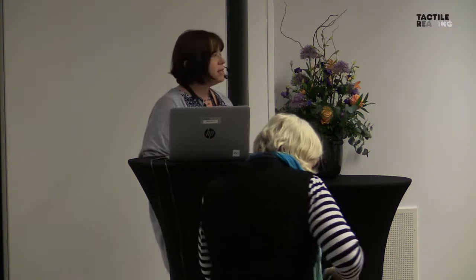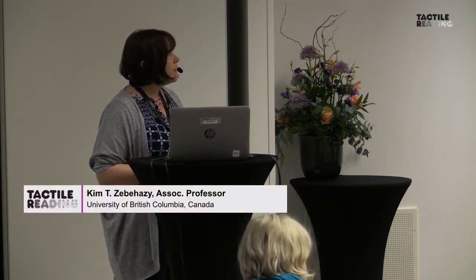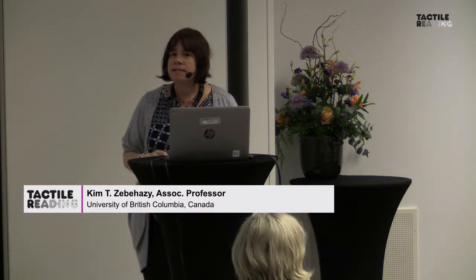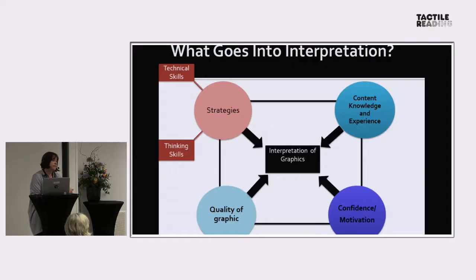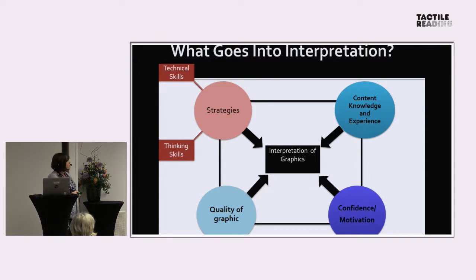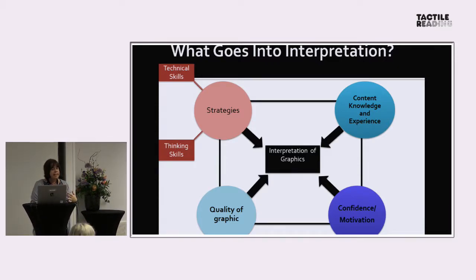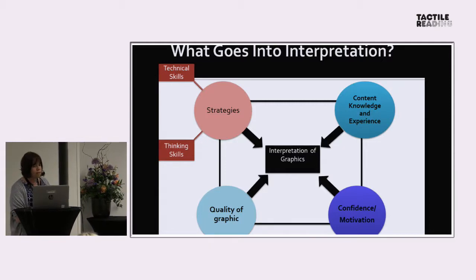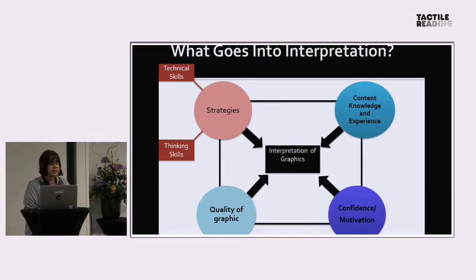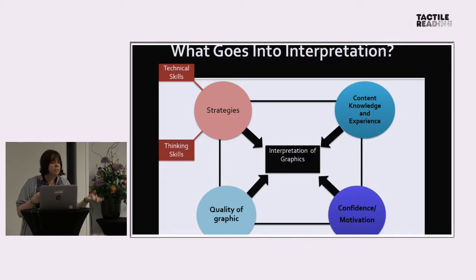I'm going to start by showing a graphic that is a model of what goes into the interpretation of graphics, based on data from a survey study I did of teachers that are visually impaired and students across North America. Basically, we have a rectangle that says 'interpretation of graphics' in the middle, with four circles pointing into it: content knowledge and experience, confidence and motivation of the students, the quality of the graphic itself, and the strategies that students bring to the graphics. Those strategies break out into both technical skills as well as thinking skills.